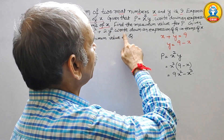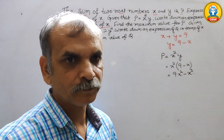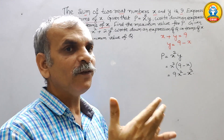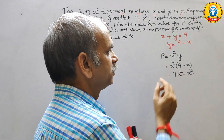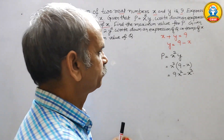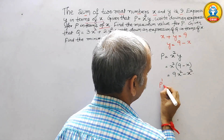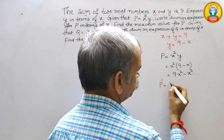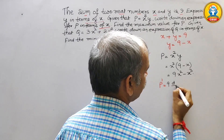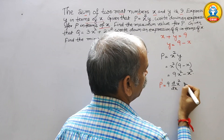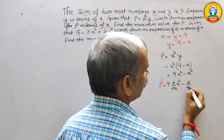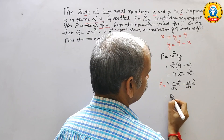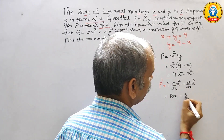Then they have told us to find the maximum value for p. For maximum and minimum we have to go for differentiation. So first we will find p dash, which is equal to 9 d/dx of x squared minus d/dx of x cubed. So that gives us 18x minus 3x squared.